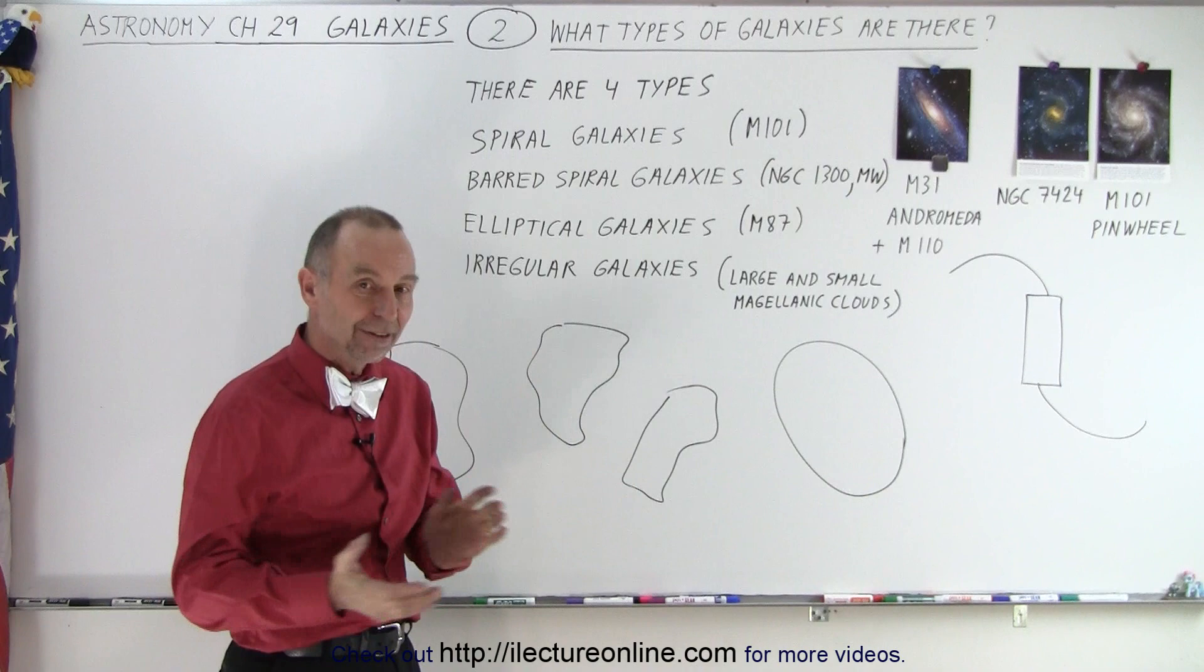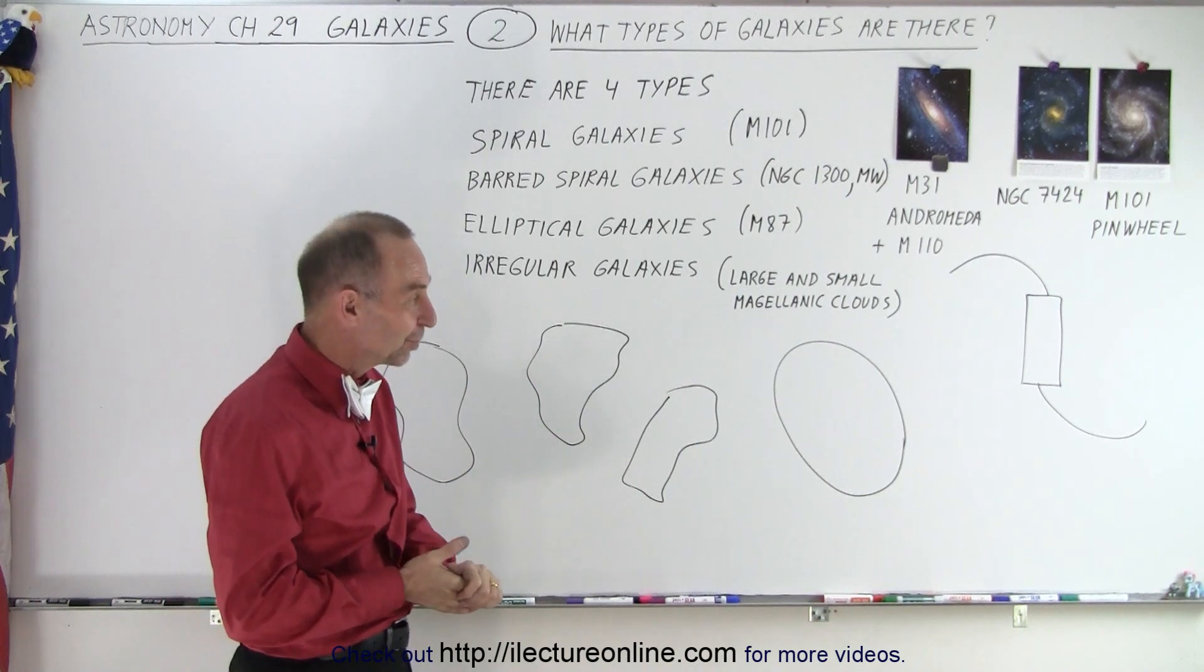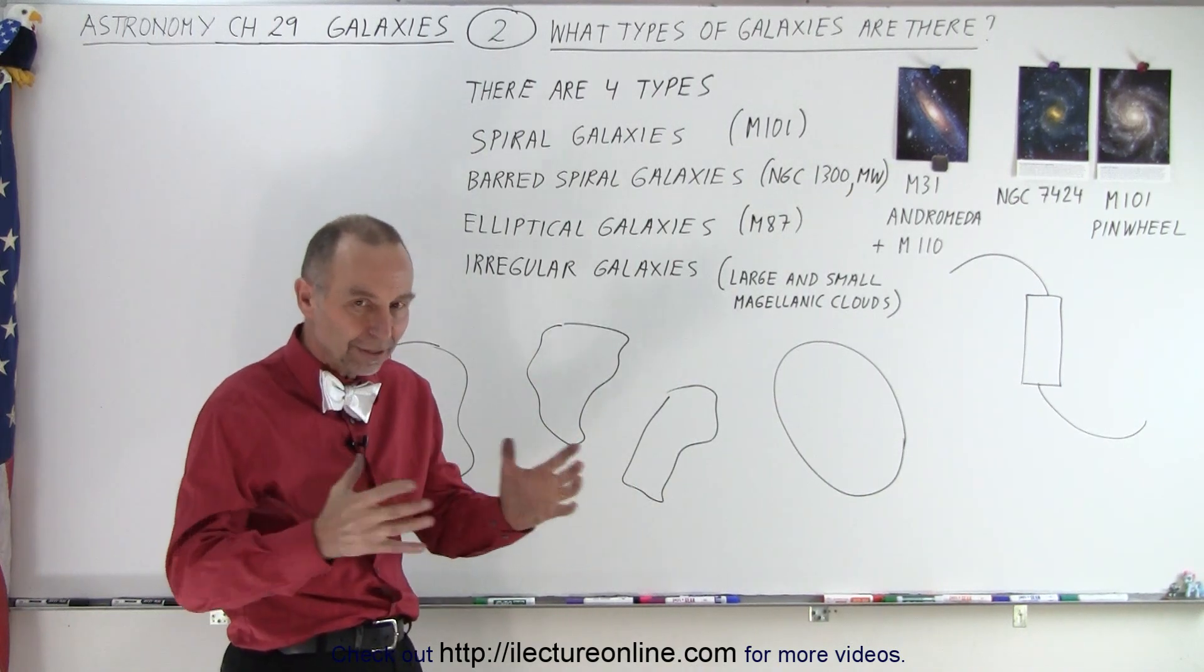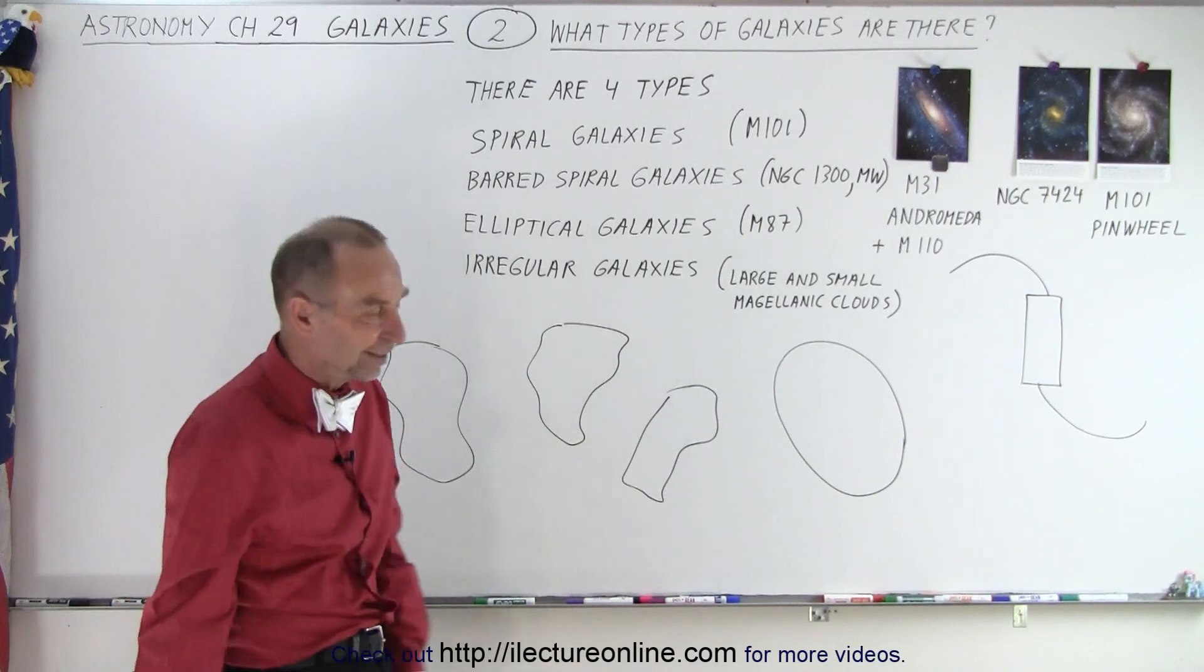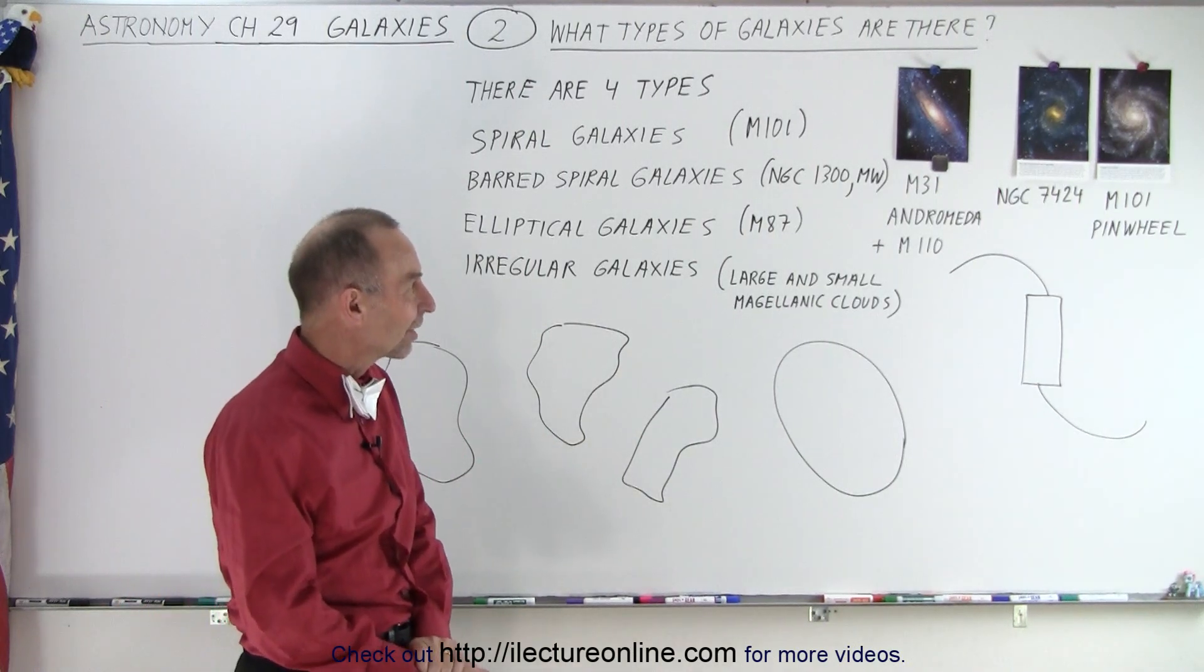They're kind of everywhere. That's what we mean by isotropic—the universe looks the same everywhere, the same kind of consistency with the different types of galaxies.